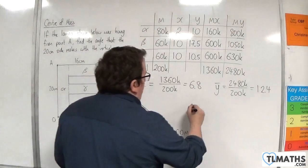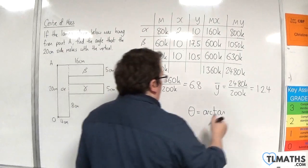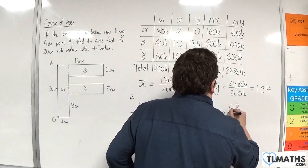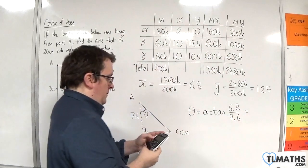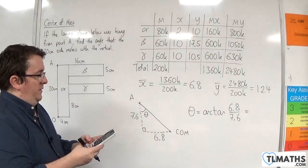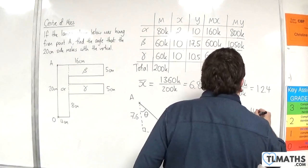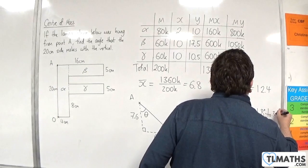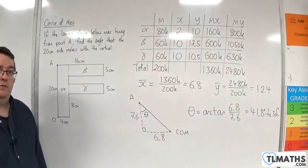So theta is going to be the arctan of opposite over adjacent, so 6.8 over 7.6. So 6.8 divided by 7.6, and we get 41.8 degrees to 3 significant figures.